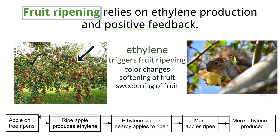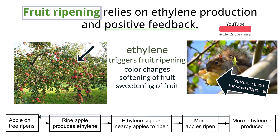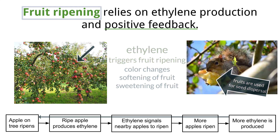Fruits serve the purpose of seed dispersal — they attract animals. Animals eat the fruit, but the seeds are indigestible and are carried off and dispersed in the feces of the animal. This positive feedback of ethylene production ensures synchronized ripening within a single plant, which is advantageous for seed dispersal, as plenty of ripe fruits are available and attractive to animals at the same time.